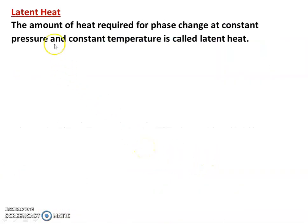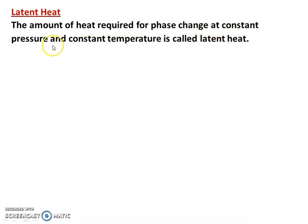Latent heat is the amount of heat required for a phase change. Any substance is available in three phases: solid phase, liquid phase, and gaseous phase. During the phase change, pressure and temperature are constant. The amount of heat required for phase change at constant pressure and constant temperature is called latent heat.